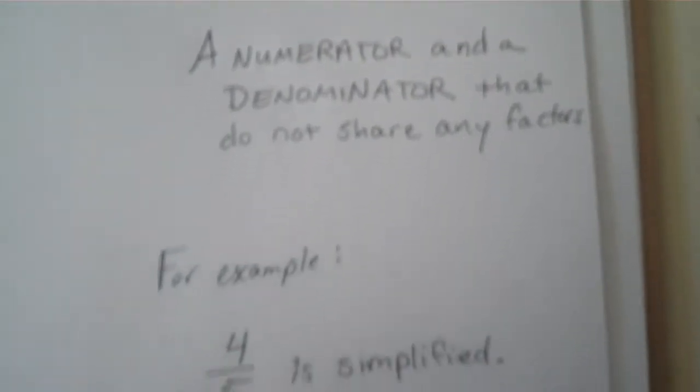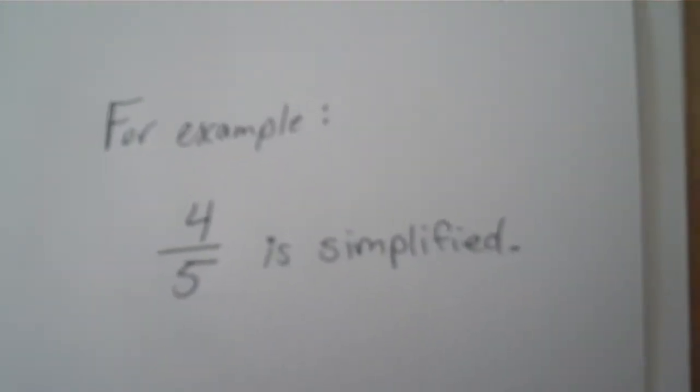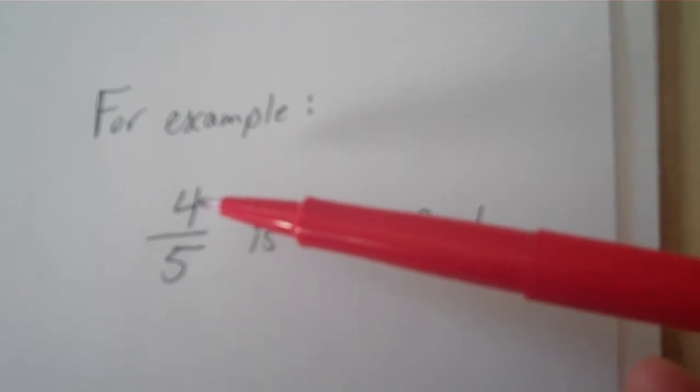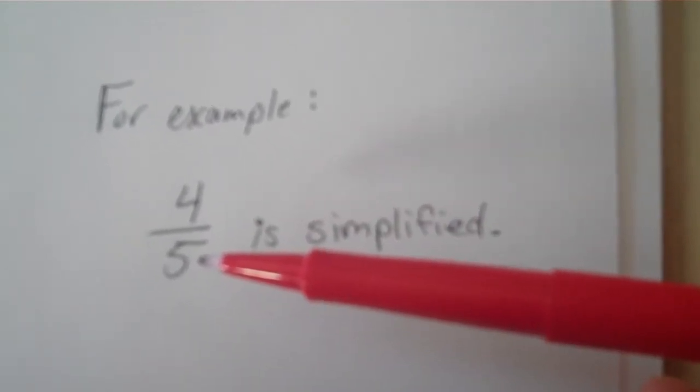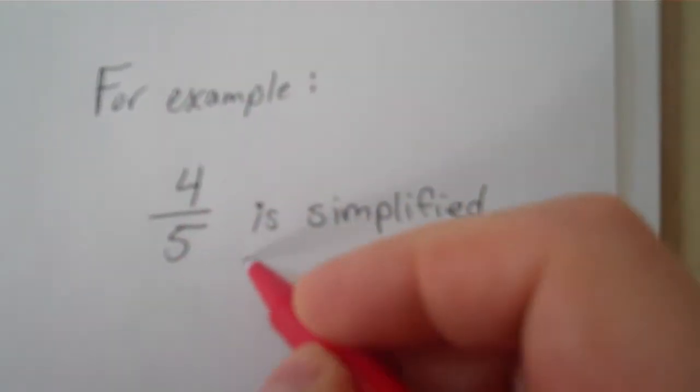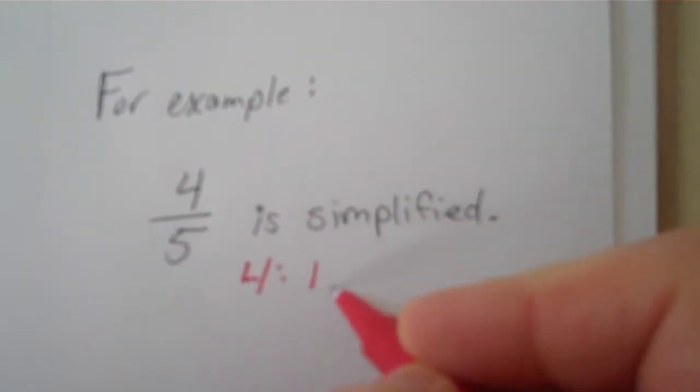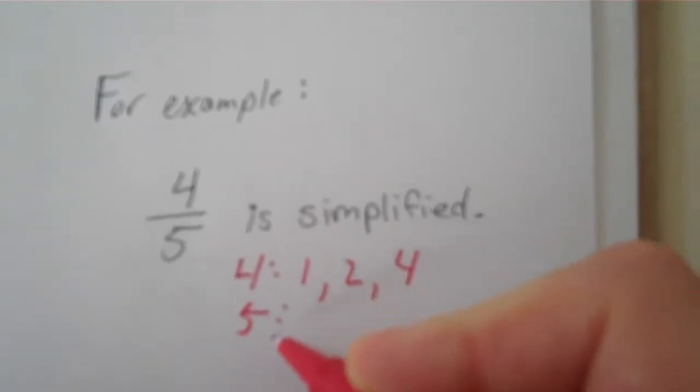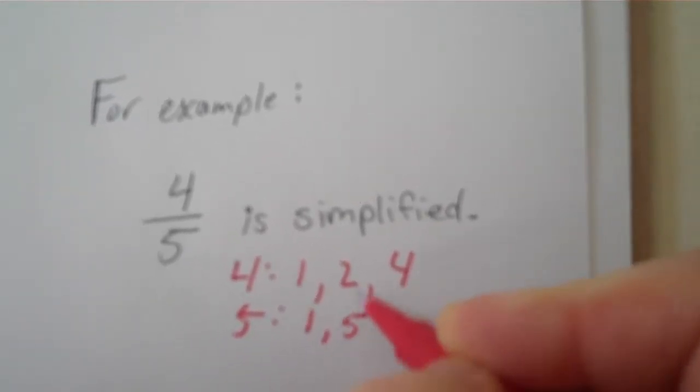For example, 4 fifths is simplified. There's nothing that I can divide 4 by that I could also divide 5 by. Let me show you. The factors of 4 are 1, 2, and 4. The factors of 5 are 1 and 5.